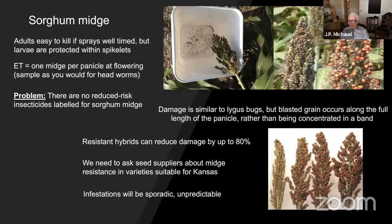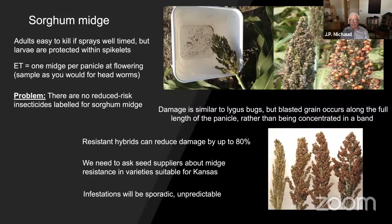If you do spray for sorghum midge, you risk flaring other pests such as aphids. The final damage is very similar to lygus bug damage — empty seed capsules — except the empty capsules are distributed up and down the panicle rather than in a band, because you can have two generations reproducing in the same head. A large component of management in the south is planting varieties with midge resistance, which can reduce damage by up to 80% and increase the spray threshold to five midges per head. I have no idea which midge-resistant varieties would be suitable for our region, so this is a question to put to seed suppliers, and it might be a new breeding objective for Kansas sorghum if the problem gets more widespread.